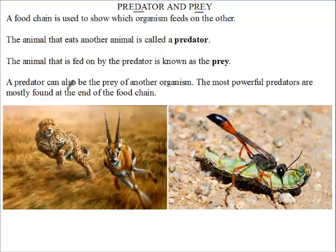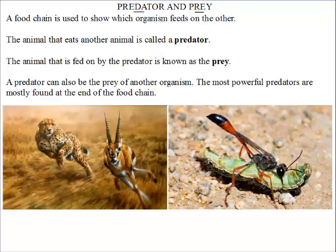A predator can also be the prey of another organism. This ant here is eating this caterpillar, but the ant could also be prey of a bird. When the bird eats the ant, the bird is the predator of the ant. And since the ant also fed on the caterpillar, the ant is also the predator of the caterpillar.